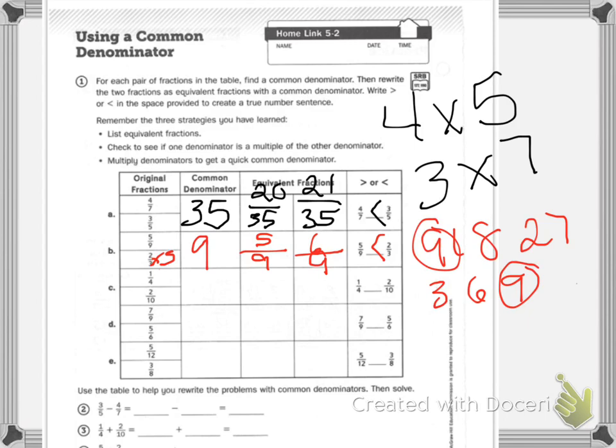For problems 2, 3, and 4, use the table to help you rewrite the problems with common denominators then solve. So again, 5 and 7, we know what our fractions are. If I have 21 thirty-fifths minus 20 thirty-fifths,